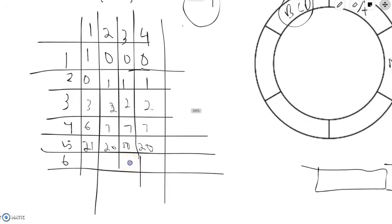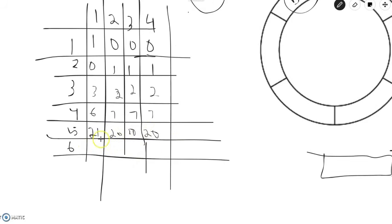And the last one, we have 20 plus 20 plus 20 is 60. We have 21 plus 20 plus 20, which is 61. We have 21 plus 20 plus 20, which is 61. And we have 21 plus 20 plus 20, which is 61.